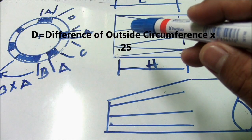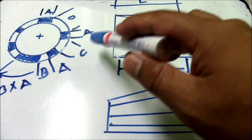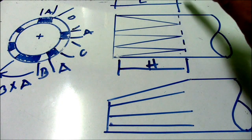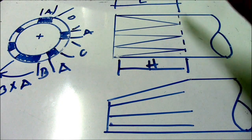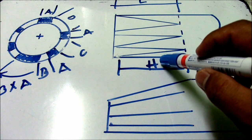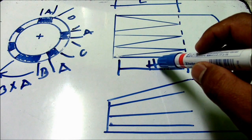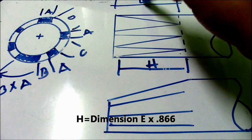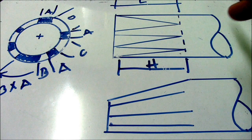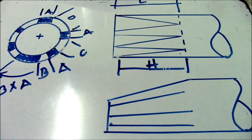Letter E: to find letter E, use 1 and 1/2 multiplied by the outside diameter of the larger pipe. Next, letter H: to find dimension H, take dimension E multiplied by 0.866. This is used for the radial cut. It is very simple to fabricate this eccentric reducer.